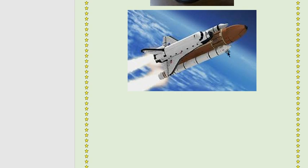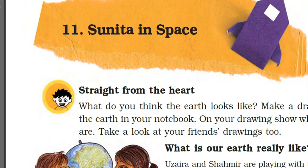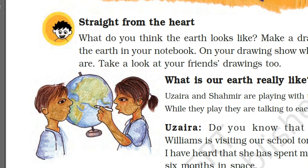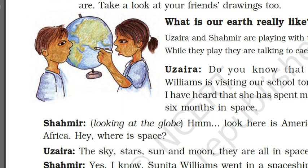This is the spacecraft — the space shuttle — in which spacemen or trained persons go into space. Now let's come to the lesson 'Sunita in Space.' The first part is 'Straight from the Heart.' What do you think the earth looks like? The earth looks like a ball — round in shape.